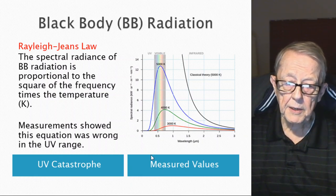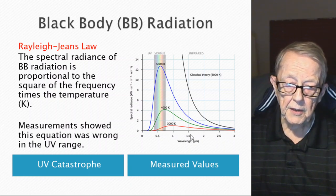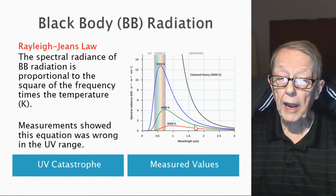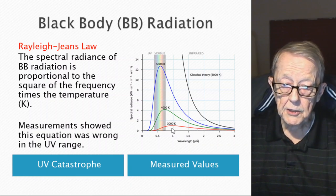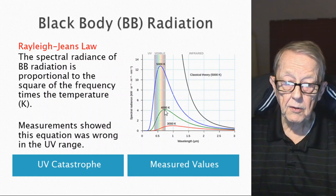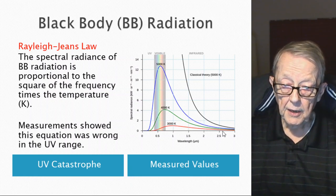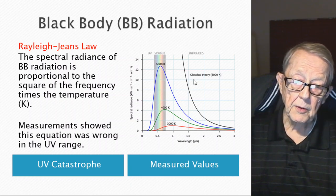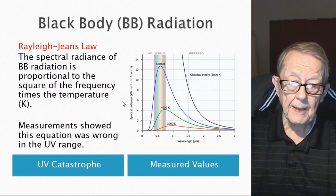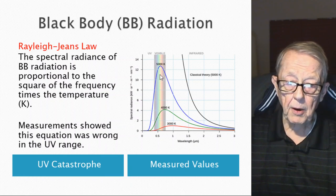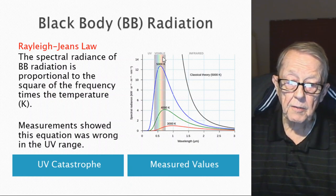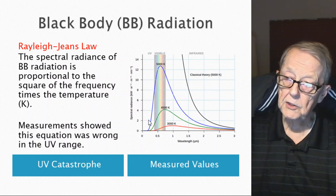The black line on the graph shows the Rayleigh-Jeans prediction — it starts okay at low values but goes to infinity. This is spectral radiance versus wavelength: smaller wavelength means higher frequency. Depending on the temperature — 3,000 K, 4,000 K, 5,000 K — the spectral radiance increases to a peak and then drops off. The classical explanation didn't drop off, and that failure to recognize this became the ultraviolet catastrophe, because clearly it wasn't going to match this falloff at higher frequencies.